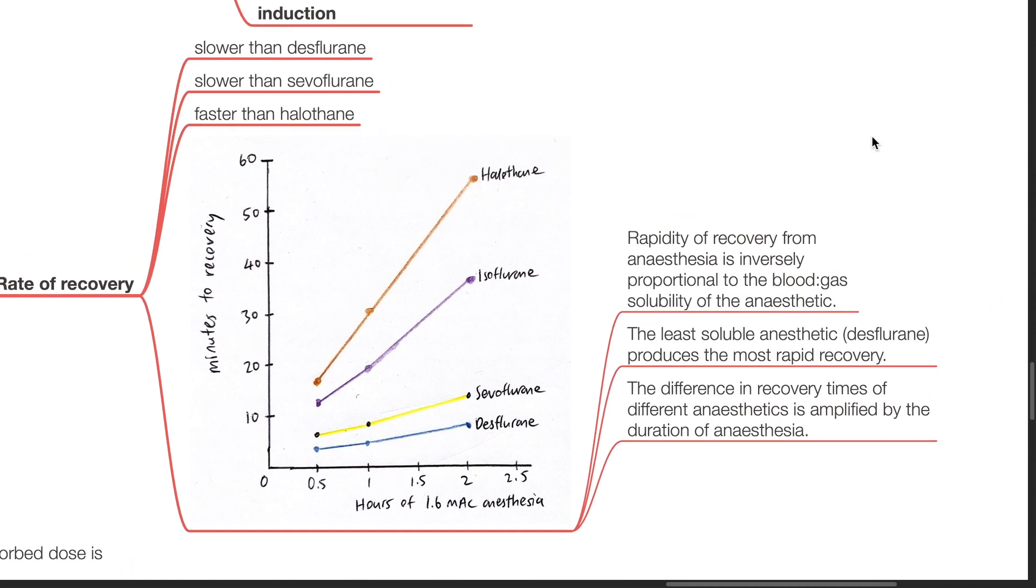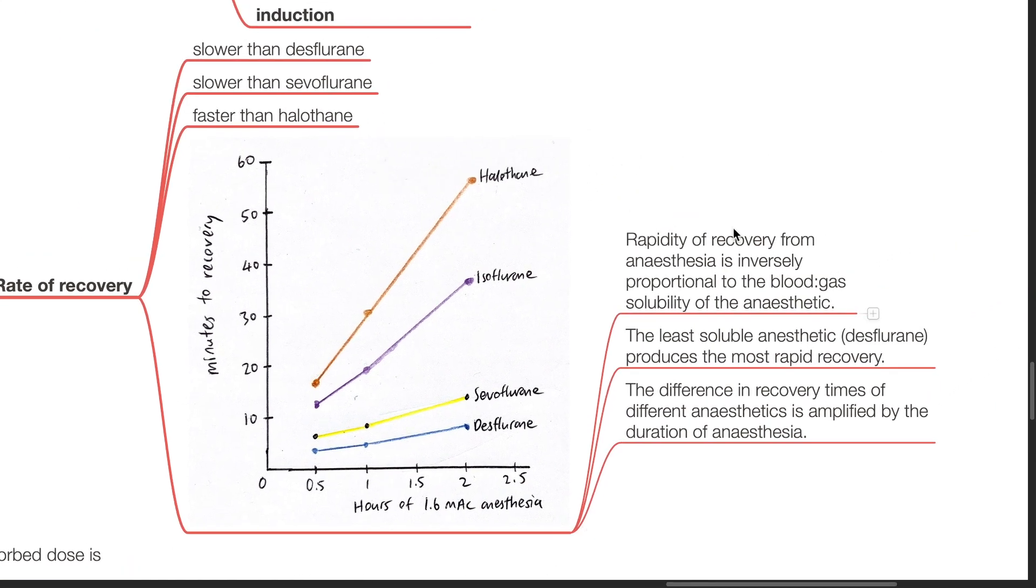This graph shows the rapidity of recovery from anesthesia of halothane, isoflurane, sevoflurane, and desflurane, and it is inversely proportional to the blood gas solubility of the anesthetic. The least soluble anesthetic produces the most rapid recovery. The difference in recovery times of different anesthetic agents is amplified by the duration of anesthesia.